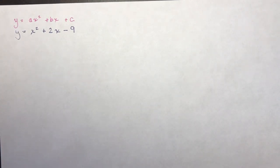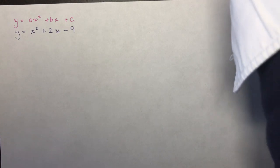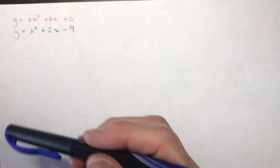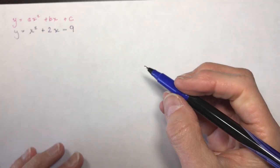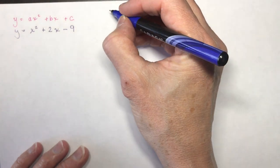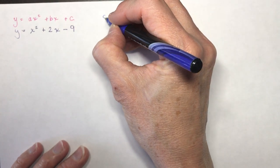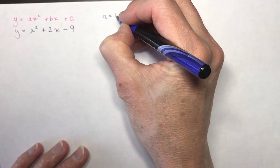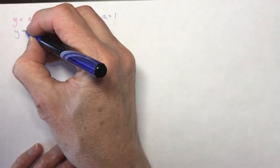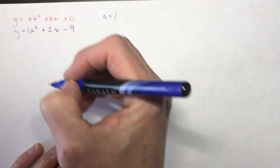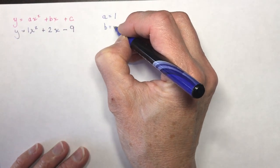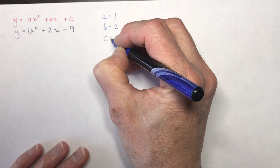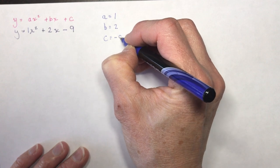Once you have it in this format — you have to have y equal something — then you can state what a, b, and c are. In this case, a would be equal to 1 because there's 1x squared, your b is 2, and your c is minus 9.